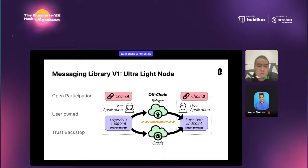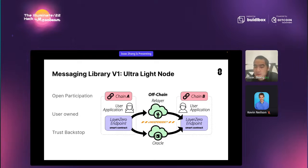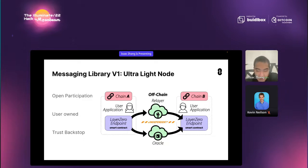Running your own relayer or oracle would be what we call the trust backstop. You can backstop anything from happening, but yourself cannot individually fake any messages to the app. This is the high-level properties of the Ultralight Node, which is the first version of the messaging library. We are researching many new variants of the Ultralight Node, including some new messaging verification mechanisms based on zero-knowledge proof. And after that, we just keep adding that to the endpoint so that our users can passively subscribe to all these improvements behind the scene.